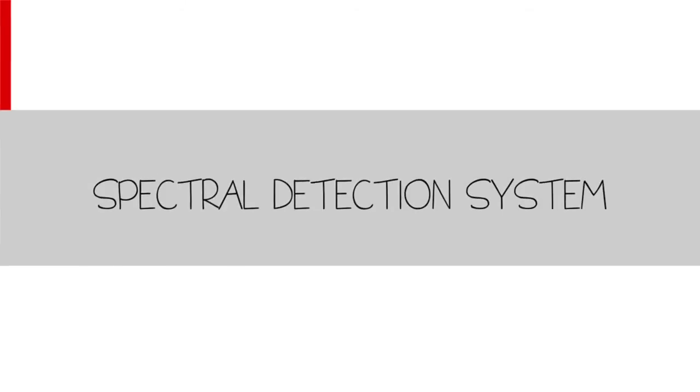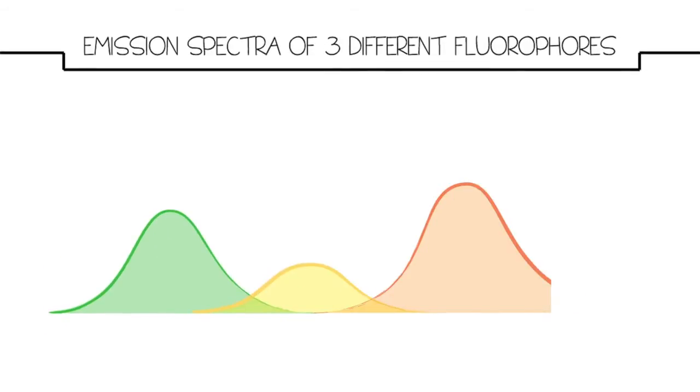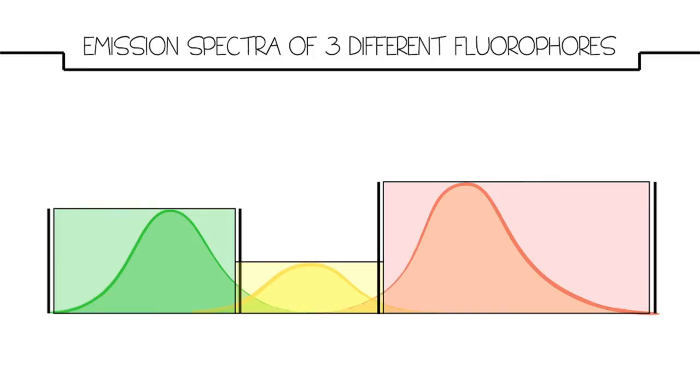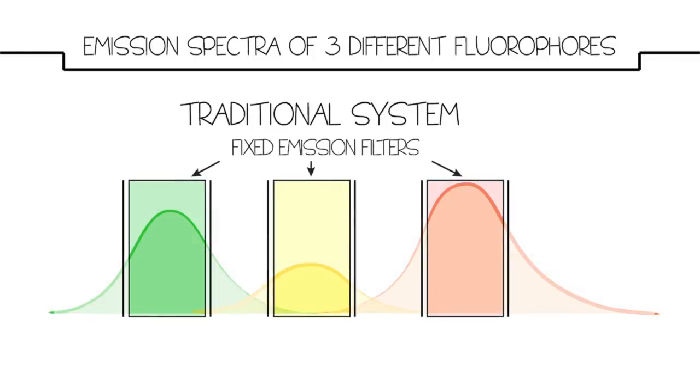Today's fluorescent samples can emit signals of overlapping spectra and varying intensities. For high fidelity images, each detection channel must be optimized to maximize photon collection for each signal. However, the inefficiencies of filter-based detection methods result in loss of the emission signal.